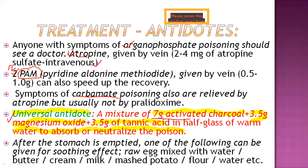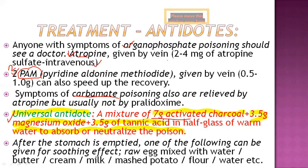After the stomach is emptied, one of the following can be given for a soothing effect: raw eggs mixed with water, butter, cream, milk, mashed potato, or flour — any one of these mixed with raw eggs can give the person immediate relief. This is the overall first aid, treatment, and antidotes for pesticide poisoning. Thank you.